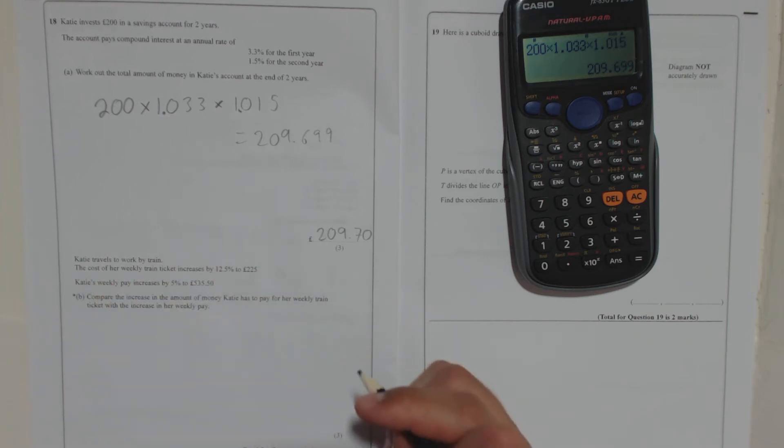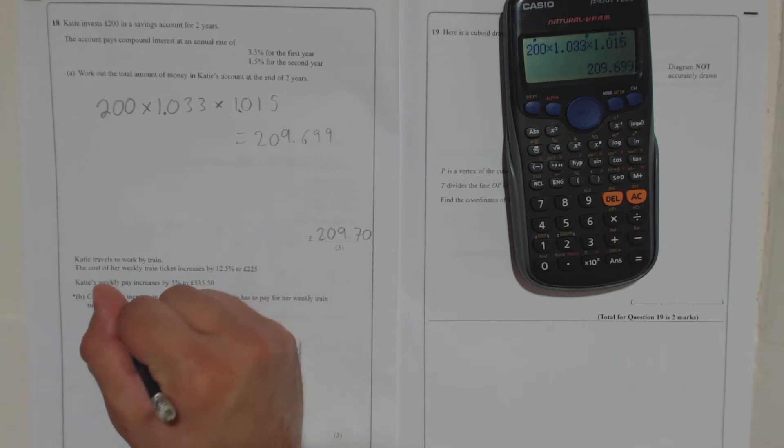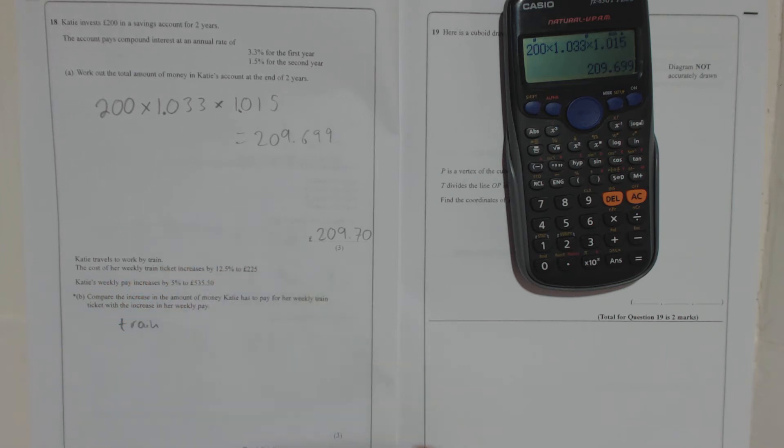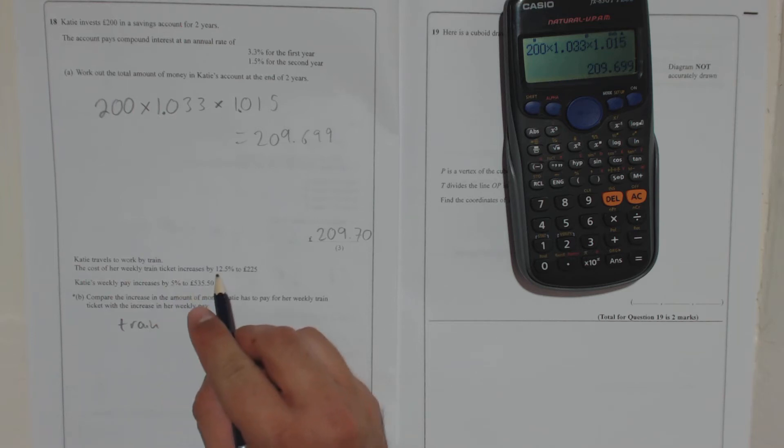So if we take her train ticket. So the train ticket, okay, her old, the old price increases 12.5% to 225.